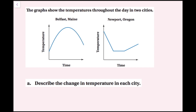In Newport, Oregon, the temperature starts off high and then decreases over time. Then it stays at the same temperature — not changing — for a chunk of time. And then right around the end it slowly starts to increase.